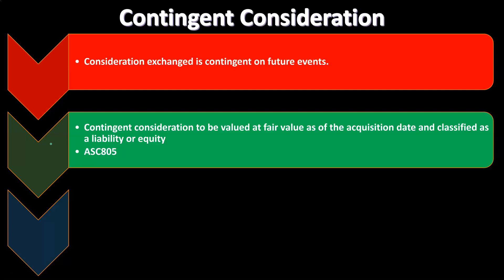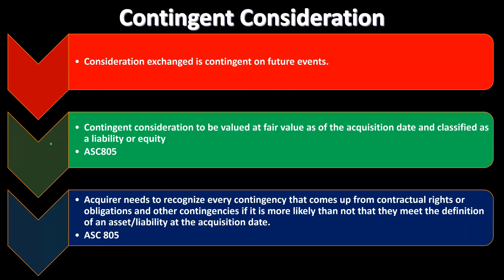With contingencies generally, if there's something like a lawsuit, we have to figure out whether it's very likely or somewhat likely to happen, and whether we know the valuation. If there's a lawsuit contingent on a future event — whether we win or lose — that's a useful comparison. The acquirer needs to recognize every contingency arising from contractual rights or obligations, and other contingencies, if it is more likely than not that they meet the definition of an asset or liability at the acquisition date per ASC 805.